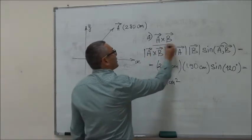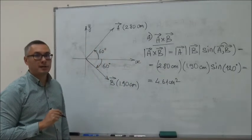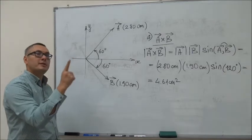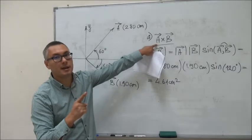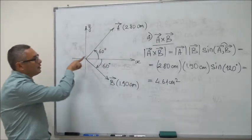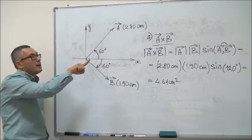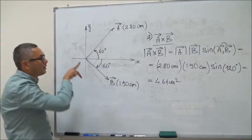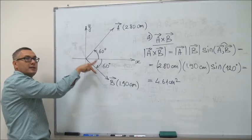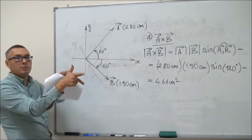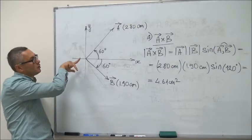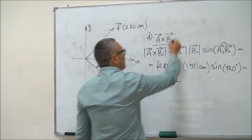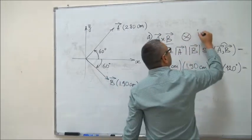Now, what about the direction of the A cross B vector? To find the direction, we use the so-called right-hand rule. The right-hand rule states that whenever you have a cross product, the index finger points along the first vector — in this case the A vector. Then the middle finger points along the second vector of the cross product, in this case the B vector. With the index finger pointing along A and the middle finger pointing along B, the thumb will point along the cross product — into the board.